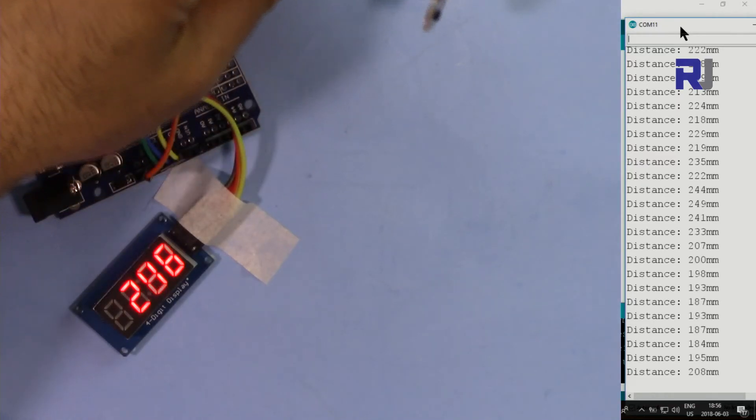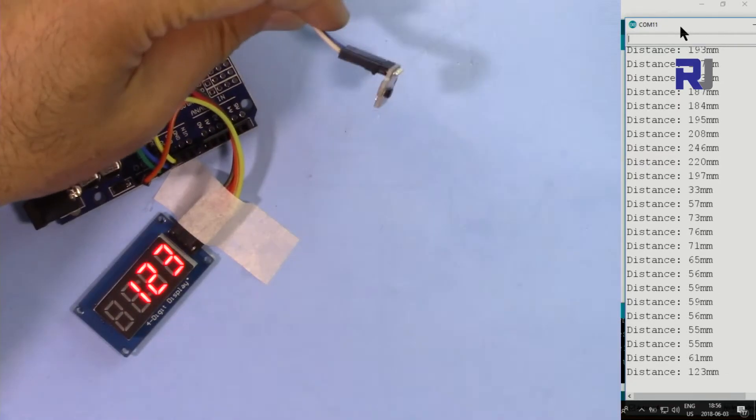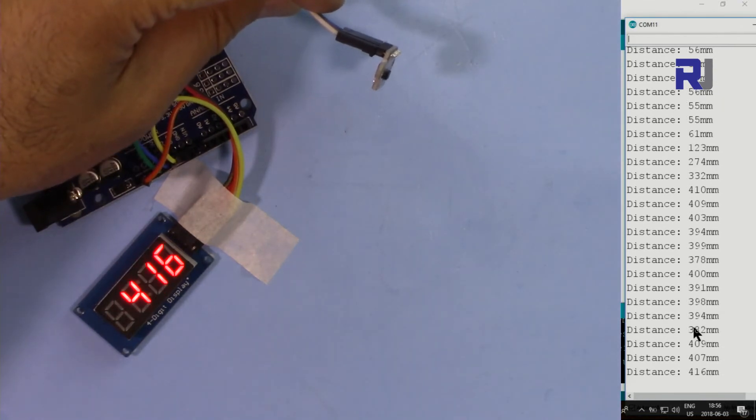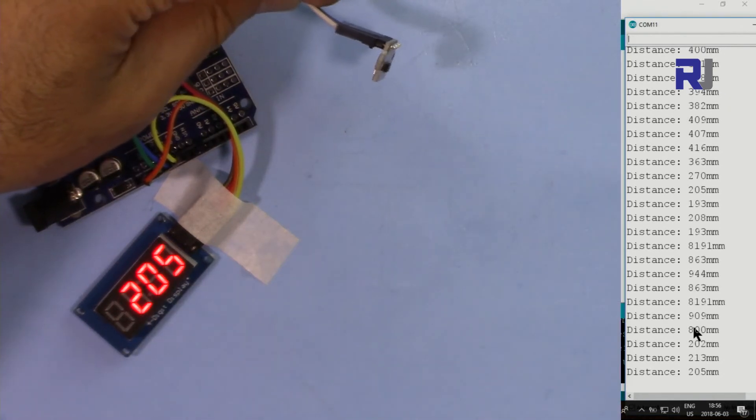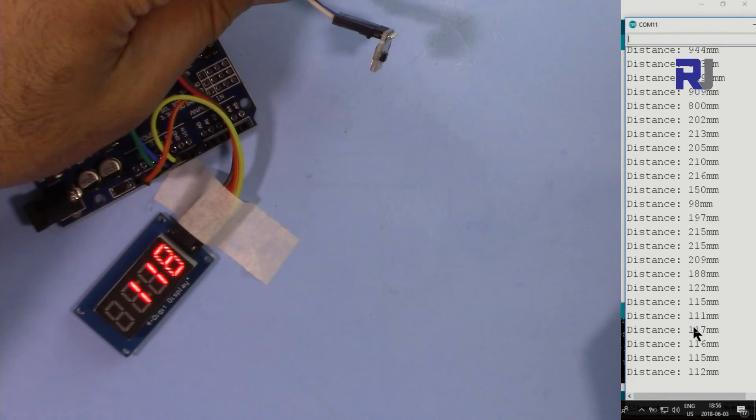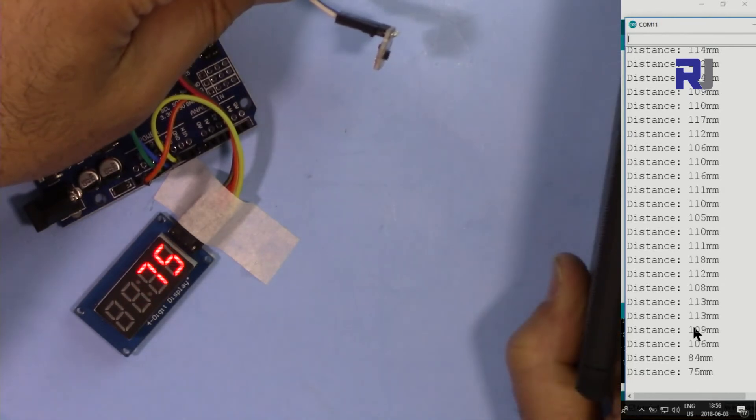Now here is a demonstration. As you can see, we're reading the value here on serial monitor and it's displayed here on the 7-segment display. It's fluctuating because the object is not stable. Despite those variations, the display is very stable.